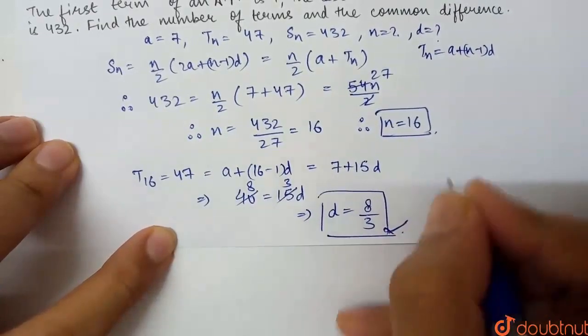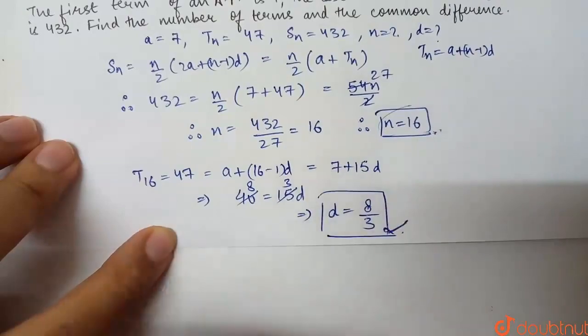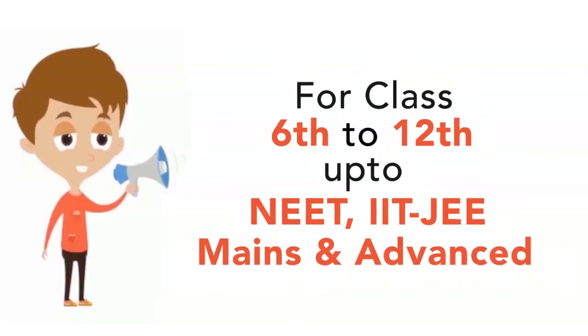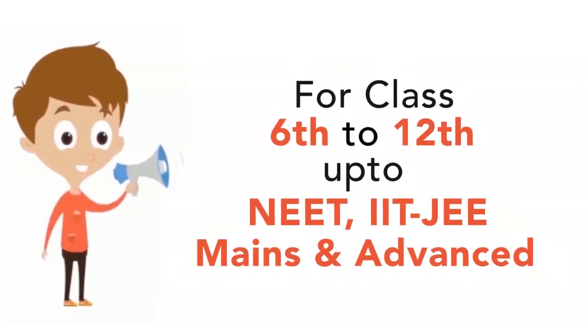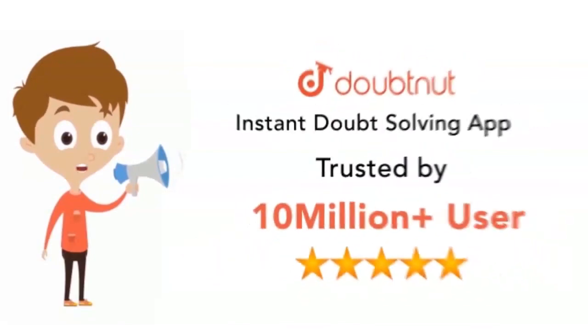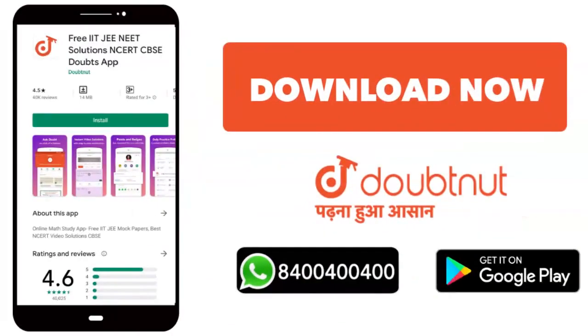The common difference D is 8 by 3, and the number of terms N is 16. Join 10 million students. Don't forget to download the Doubtnet app or WhatsApp us your doubts at 8444.